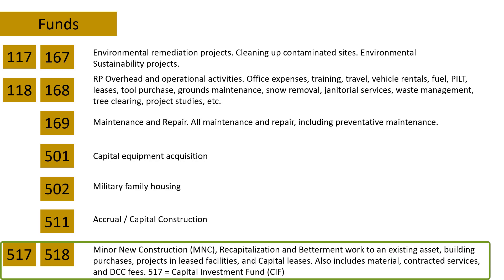Funds 517 and 518 are for larger construction projects, also called minor new construction. This includes retrofitting or refitting older buildings to upgrade them, and also covers projects in leased facilities where we might need to redesign a building. The difference between 517 and 518 is that some of these projects are part of something called the Capital Investment Fund and some are not, so we keep those two funds separate to account for which projects are on which list.